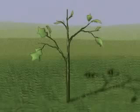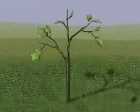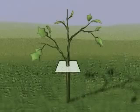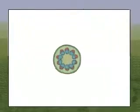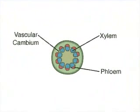Like all plants, this sapling has elongated through primary growth at root and shoot tips. As a woody dicot, it will also increase in girth. This is accomplished by secondary growth involving the vascular cambium, which is meristematic tissue that lies between the xylem and phloem.